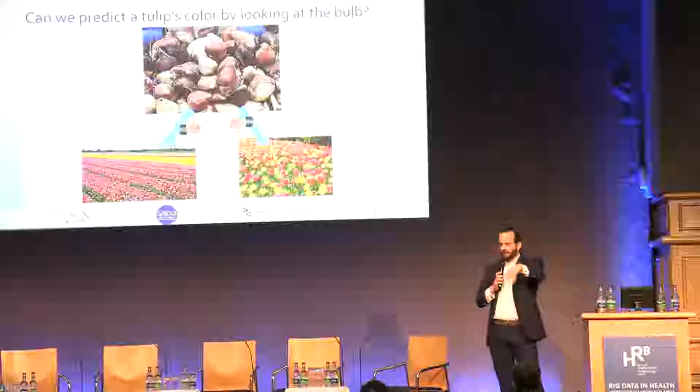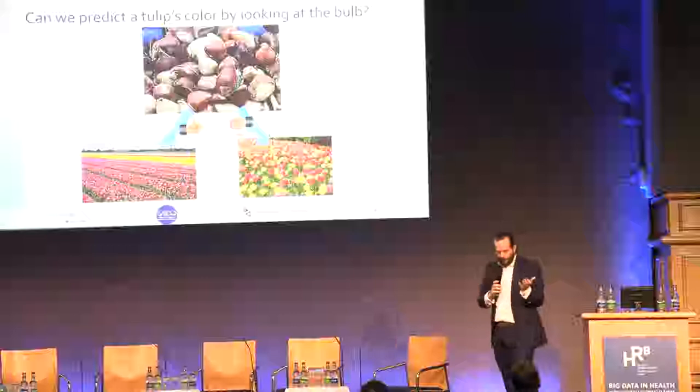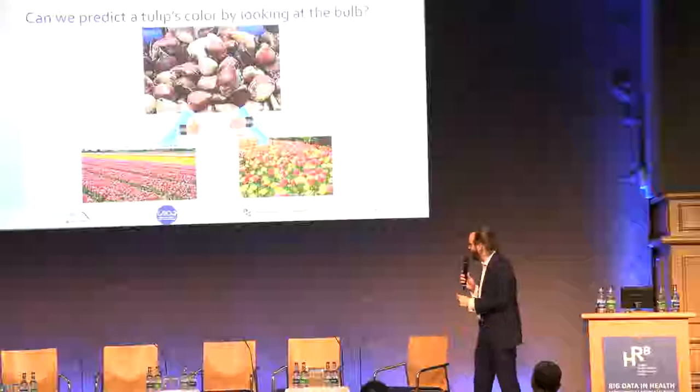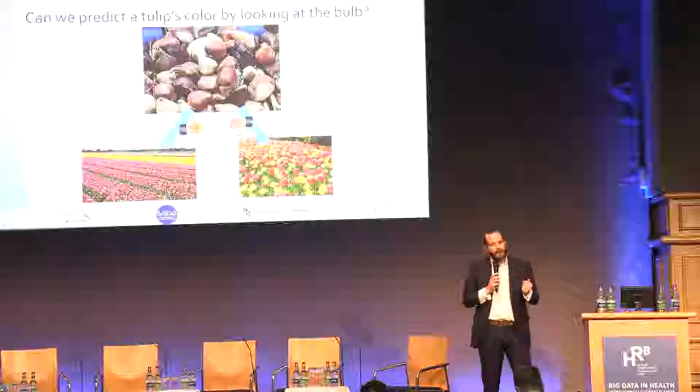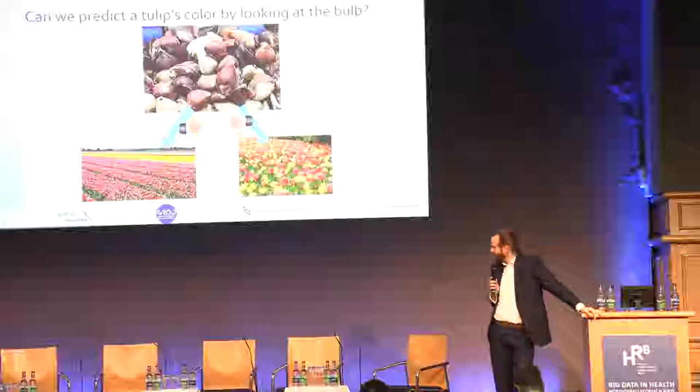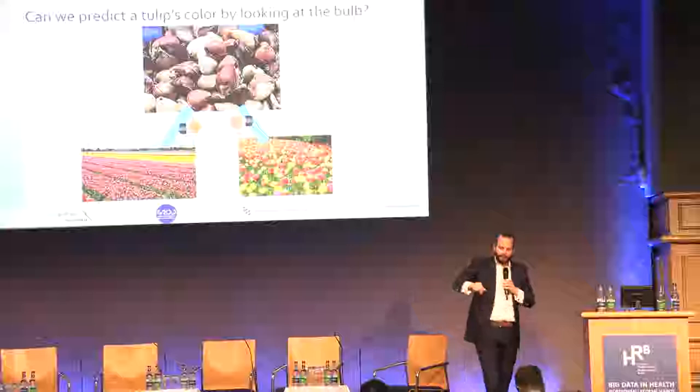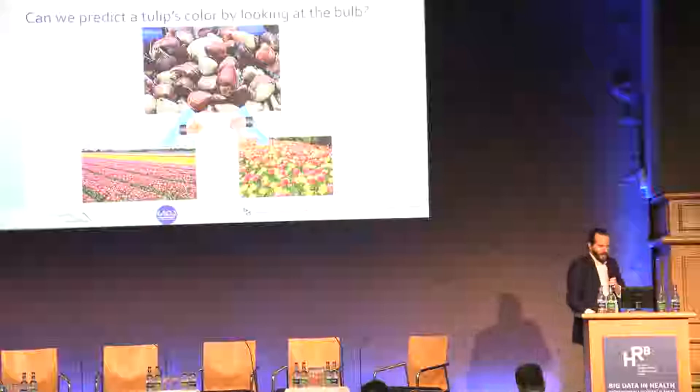The problem with tulips is you can't see on the outside of a bulb what color it will become — that's why you get a package with a picture on it. You're now faced with a problem as a farmer: you know half are yellow and half are pink, but you really want your field perfectly separated so you can cut and sell pink and yellow bouquets.